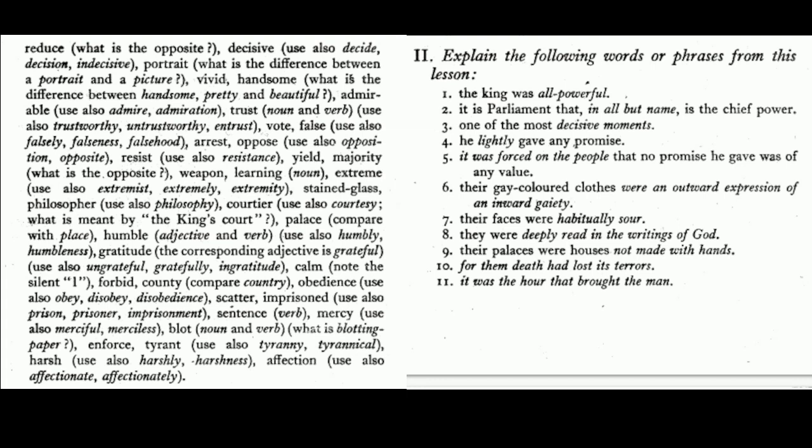2. Explain the following words or phrases from this lesson: 1. The king was all-powerful. 2. It is parliament that, in all but name, is the chief power. 3. One of the most decisive moments. 4. It was the hour that brought the man. 5. The king gave any promise, yet no promise he gave was of any value. 6. They faced very heavy casualties. 7. Their caps decorated with soaring outwards. 8. They wore gaudy ribbons in their miters. 9. In gaily colored clothes. 10. Their faces were habitually sour.